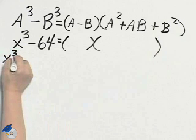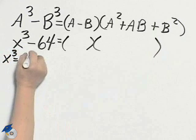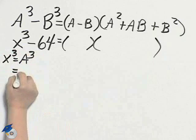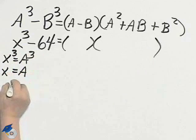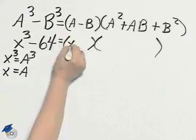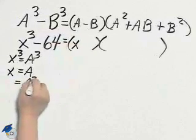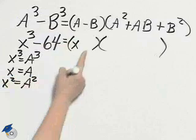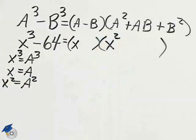X cubed is A cubed. Then plane A, which is in the formula, is plane X. So here's plane A and there's that X. Plus A squared is X squared — there's A squared, replaced with X squared.